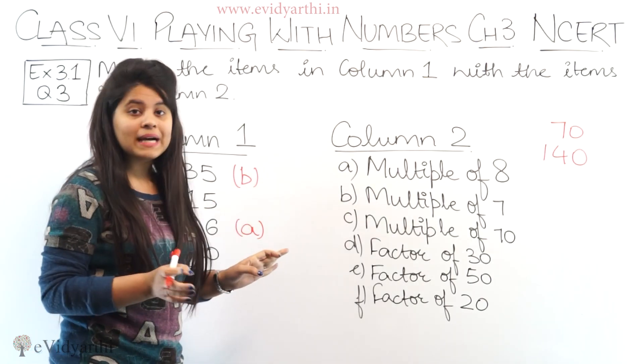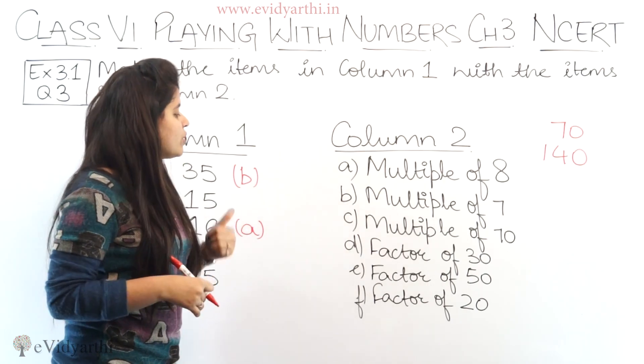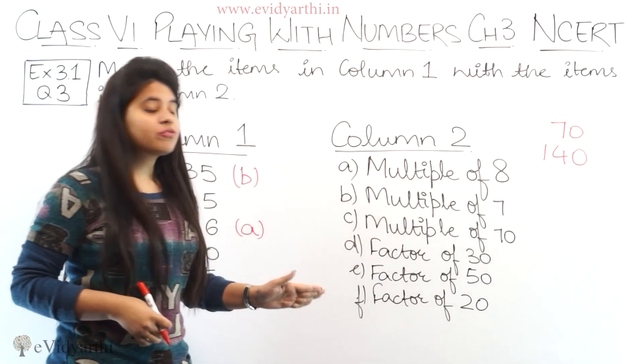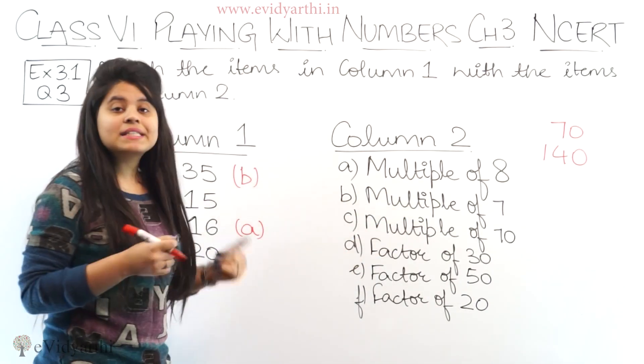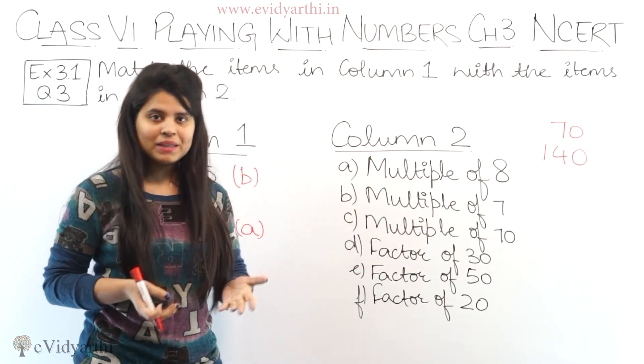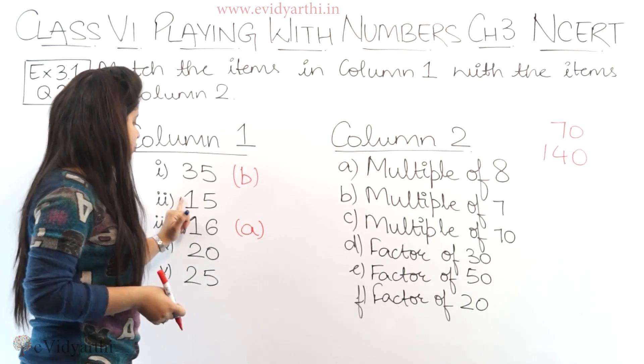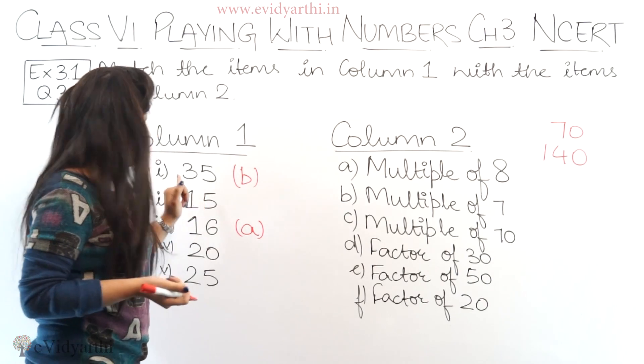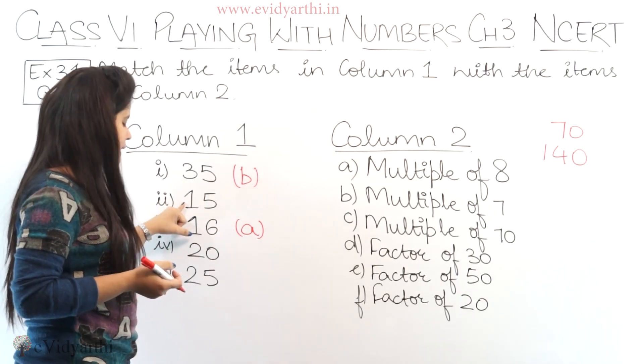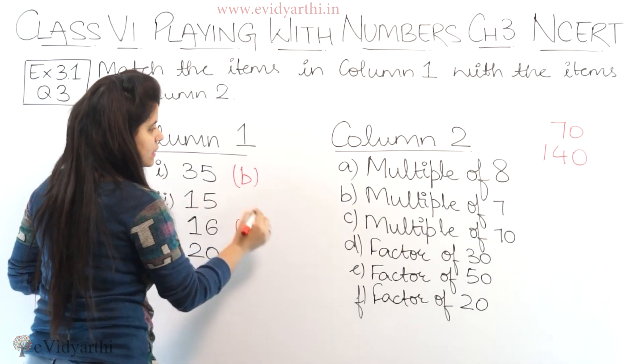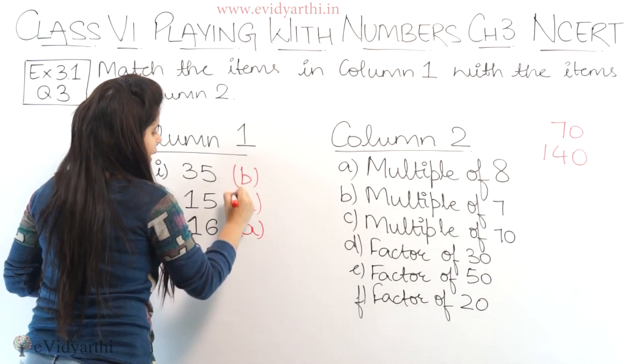This means part c doesn't have any answer yet. Moving to part d, we have factor of 30. Factor of 30 means which number's table contains 30. We have 15, 20, 25. 15 into 2 is 30, 20's table doesn't have 30, 25's table doesn't have 30. So this means 15 will be part d.